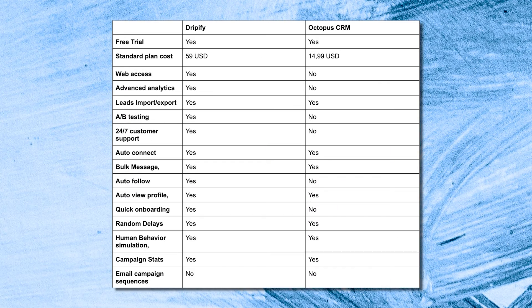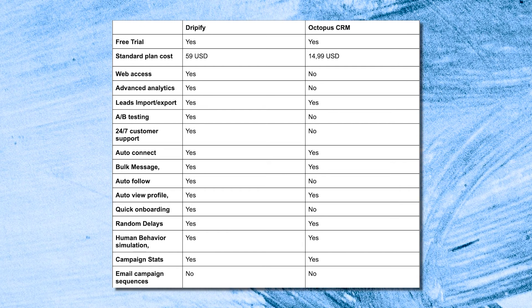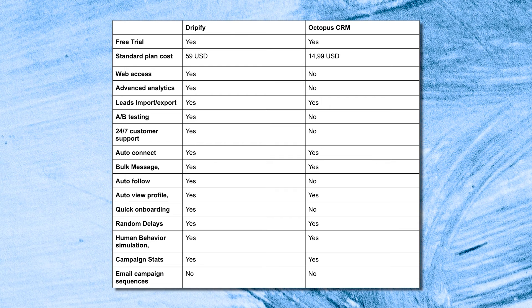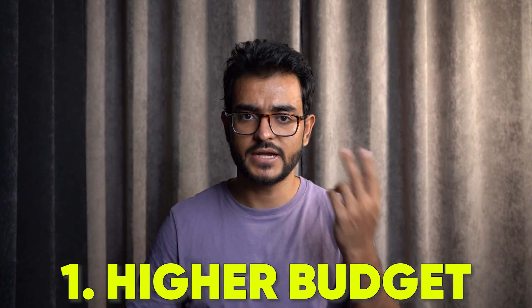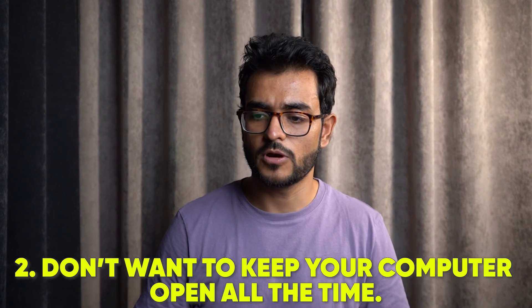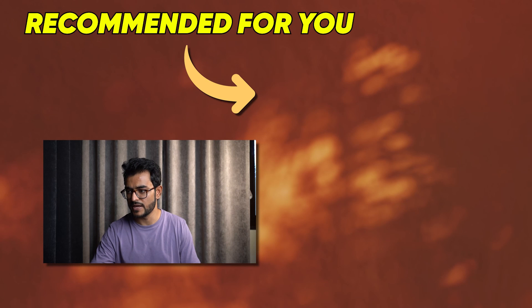So which one should you choose? We compared both tools across multiple axes and put together a comprehensive A-versus-B review — Dripify is A, Octopus CRM is B, and you can view the detailed comparison on screen. The main reason to choose Dripify over Octopus CRM is its cloud-based nature: use Dripify if you have a higher budget and don't want to keep your computer on while running automation. Otherwise, if you want a cheaper tool and don't mind it running on your computer, Octopus CRM is the way to go.